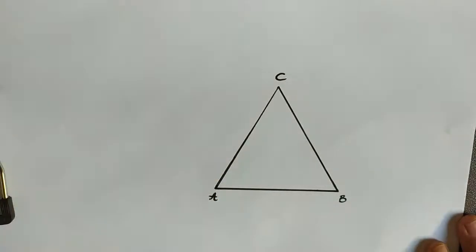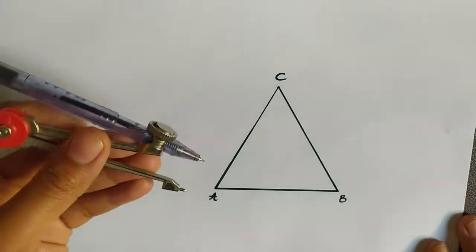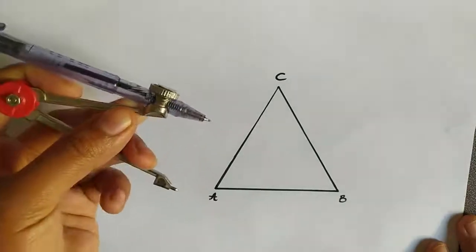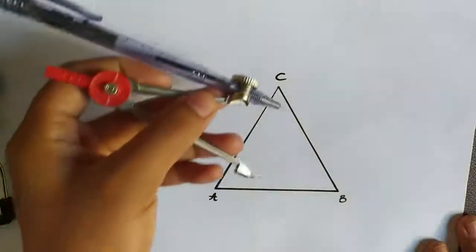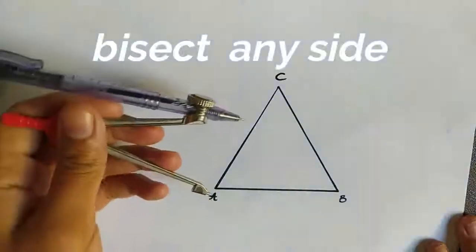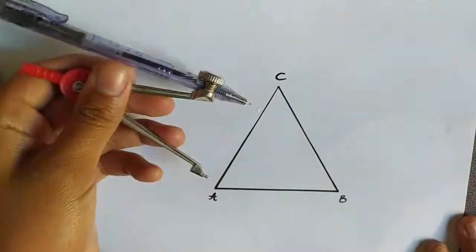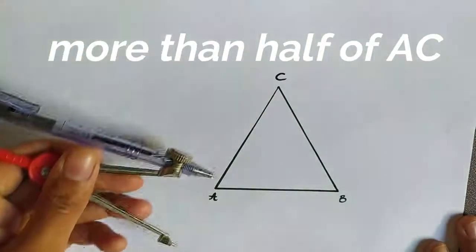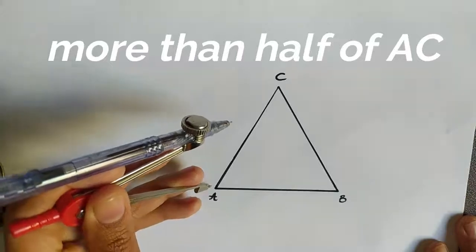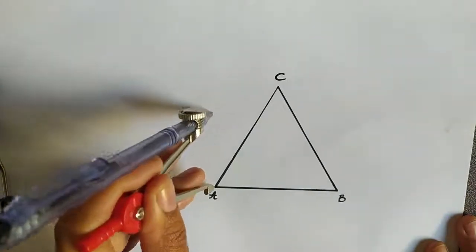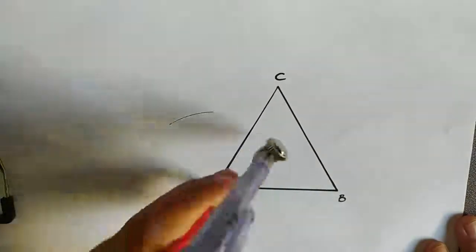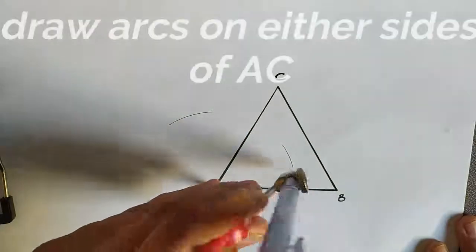First step we will take compass and bisect any side. How do we do this? More than half we have to open this compass. If you are taking some side, I am taking AC, more than half, and on one side arc and on the other side arc.